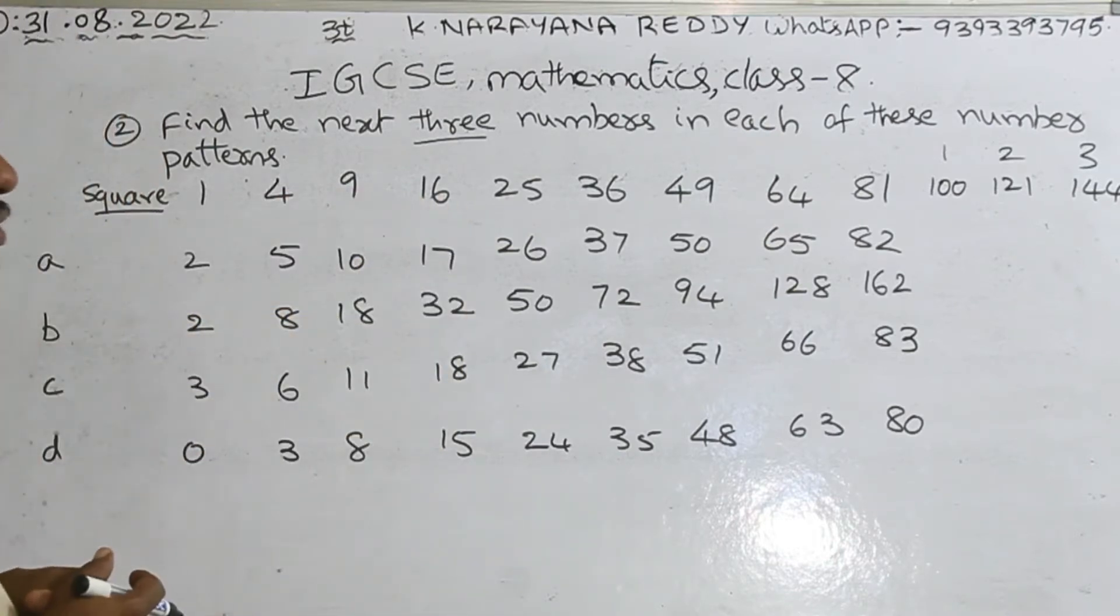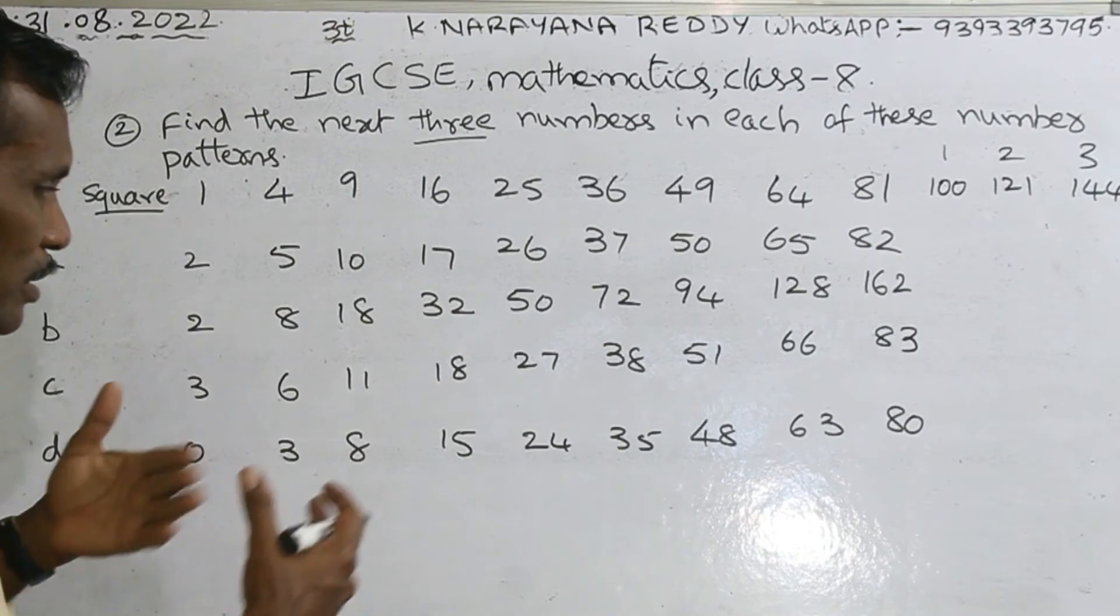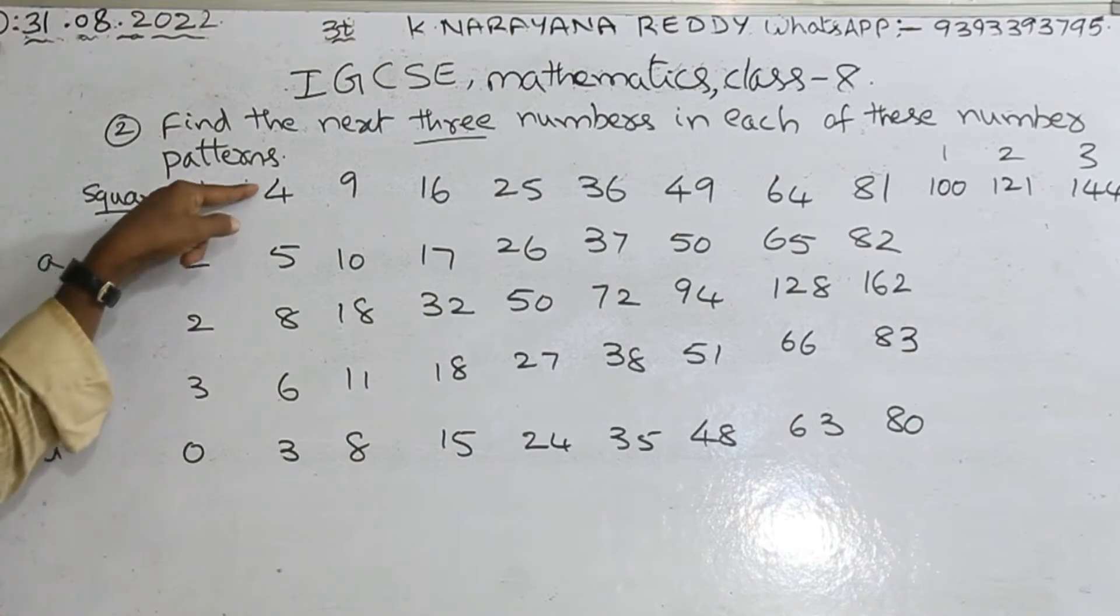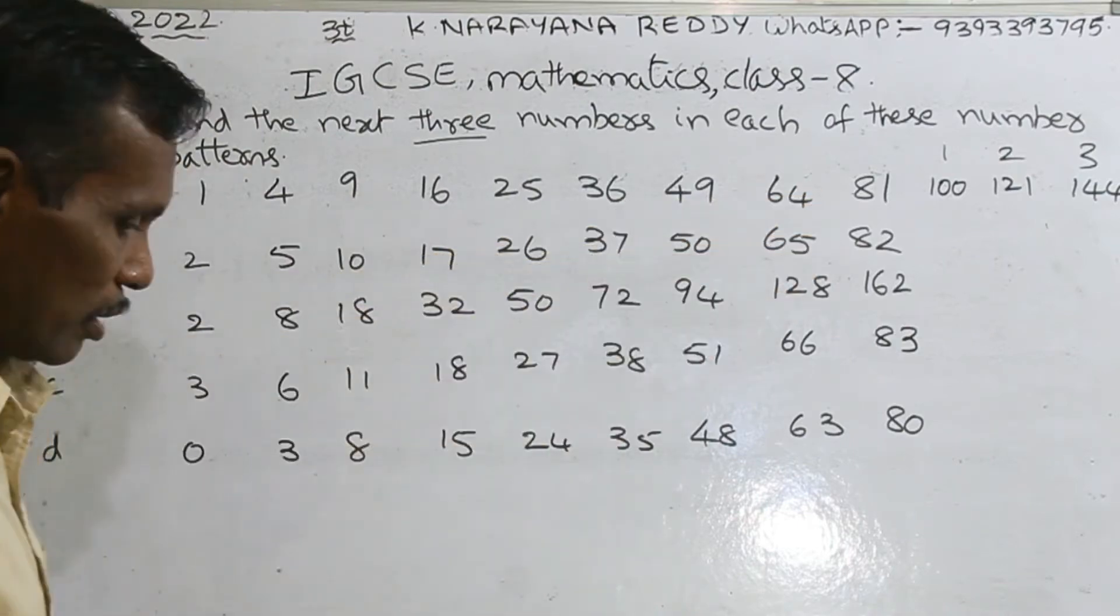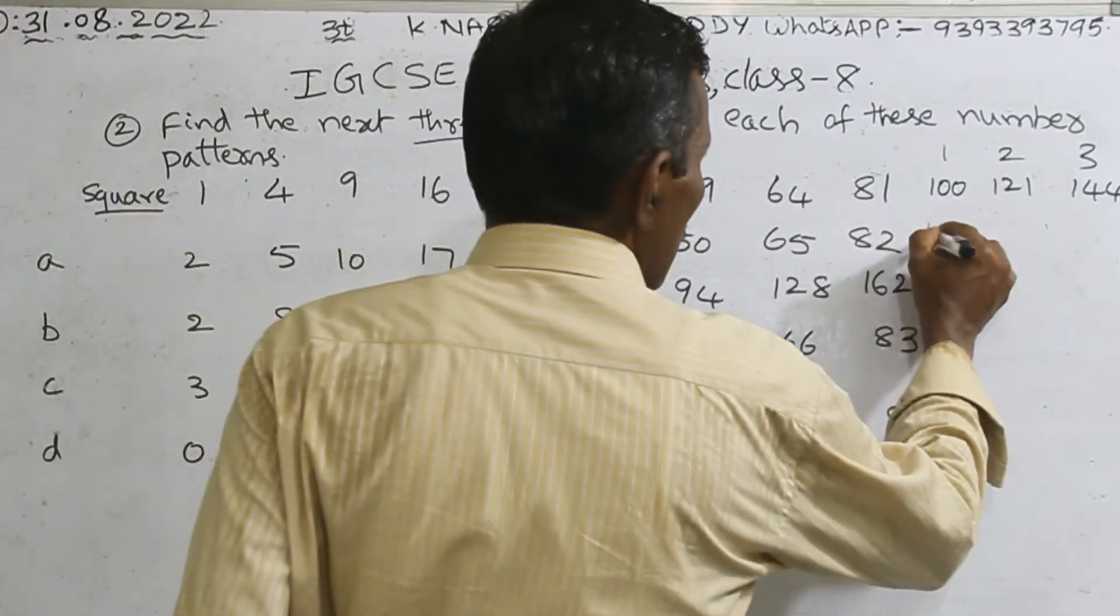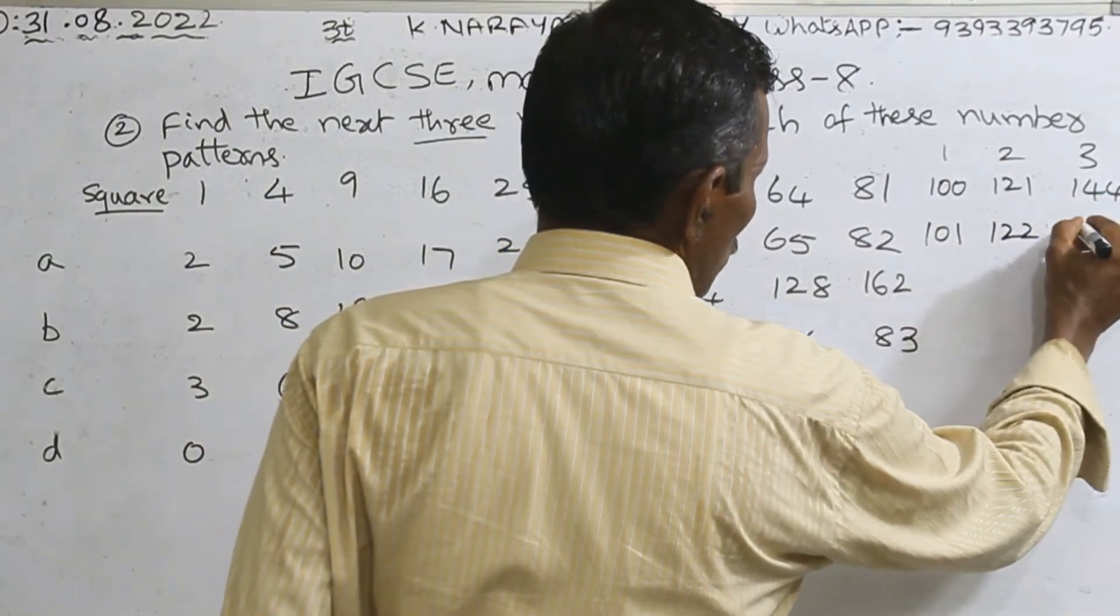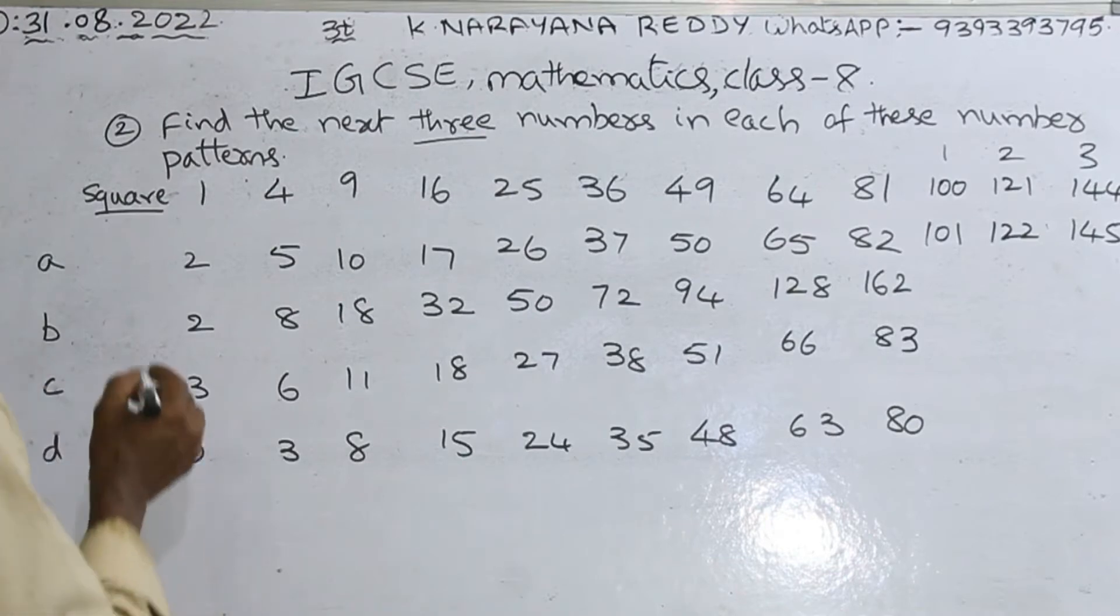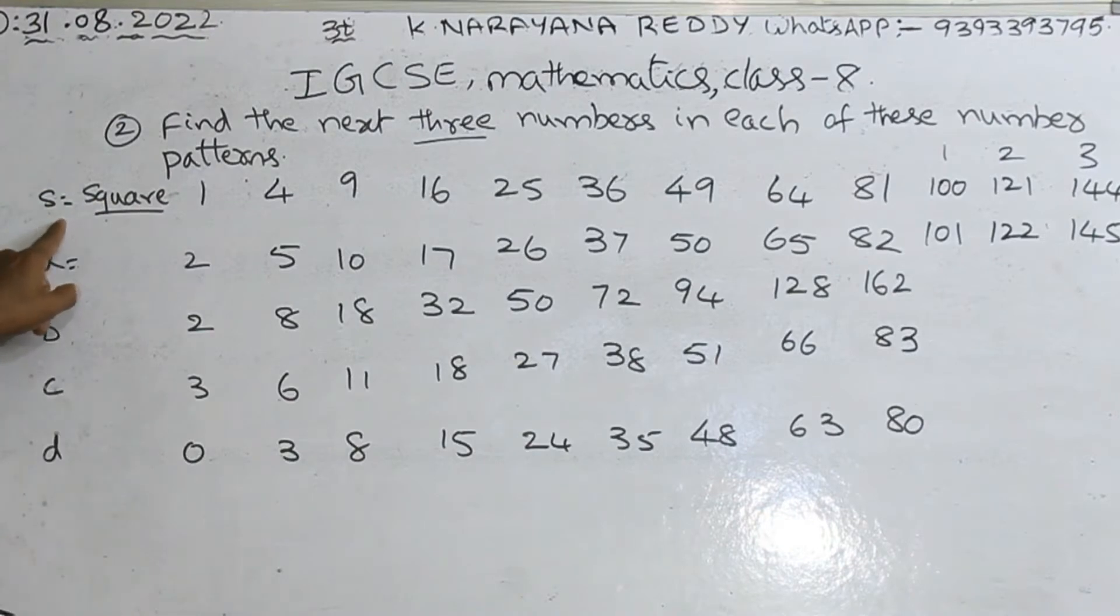Here, what has given? See here. 2, 5, 10, 17, 26, like that. What is the pattern happened here? Simple logic. 1 plus 1 equals 2. 4 plus 1 equals 5. 9 plus 1 equals 10. 16 plus 1 equals 17. Like this. 81 plus 1 equals 82. 121 plus 1 equals 122. 144 plus 1 equals 145. Second row is over. What you have done? Square plus one. Now suppose this be noted as square, S plus 1, that is A.